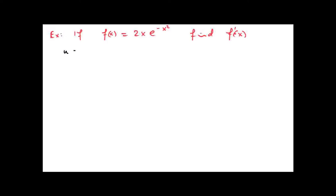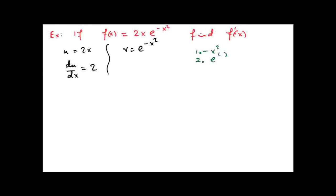So we let u equal 2x, and we let v equal e to the power of minus x squared. Now dy dx is easy — dy dx is just 2. For the chain rule, you write a list of your functions reading them backwards. The first function is minus x squared, and the second function is e. All you've got to do is differentiate each of your two functions one at a time, and that gives you your answer.